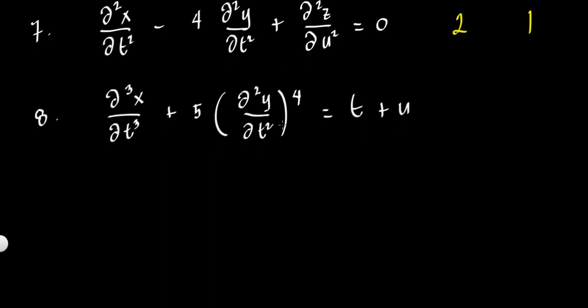Example 8: We have the third partial derivative of x with respect to t, plus 5 times the second partial derivative of y with respect to t raised to 4, equals t plus u. The highest order derivative has order 3, so the order of the differential equation is 3. The third partial derivative is raised to the power 1, so the degree is 1.